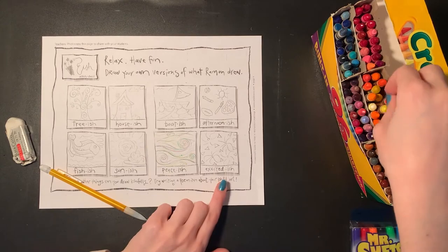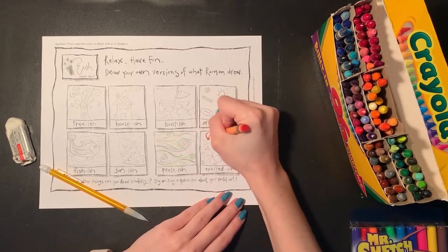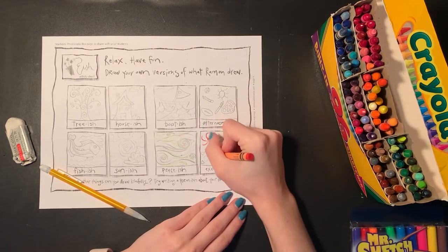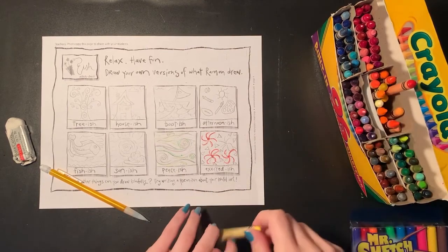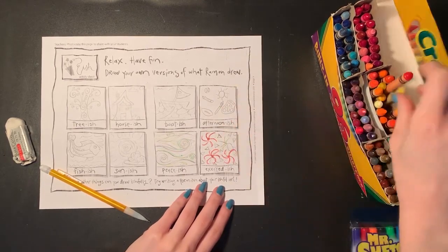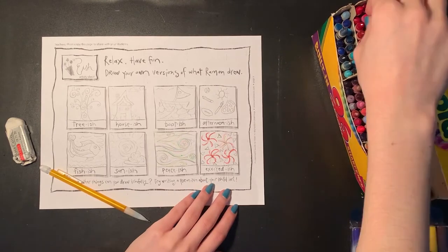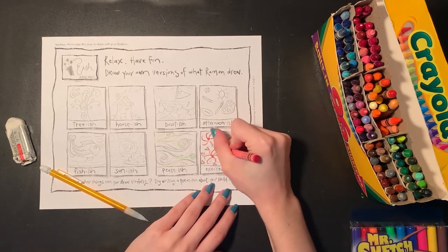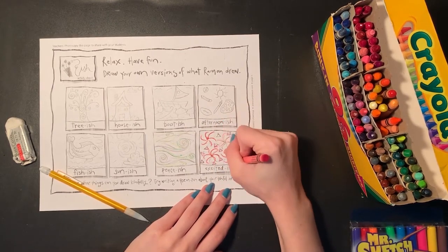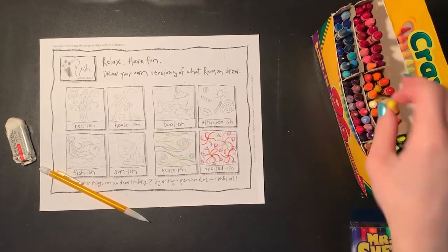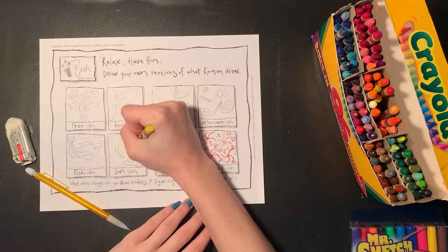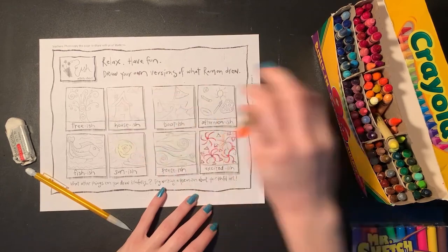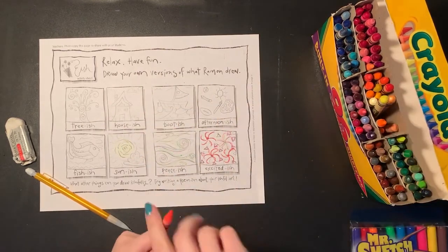Now when I think of excited-ish, I think of bright colors bursting and swirling together. So I think I'm going to add some color to this one too. I think of my warm colors when I think of excitement. So my reds, my oranges, and my yellows. Things that are bright and coming together to make a picture that is bursting with color. And now you don't have to color these in perfectly. Again, it's just to get an idea of what you think that picture would look like. And I think I'm going to add some color to my sun-ish picture as well. I think I want my sun-ish picture to be swirling lines of colors all coming together to create my glowing sun.